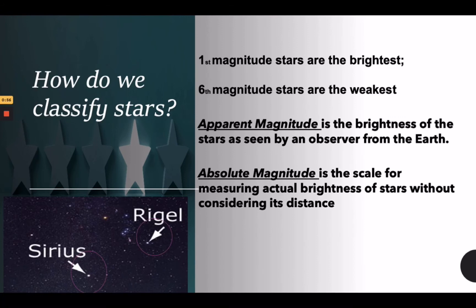To summarize: Rigel is brighter than Sirius if we talk about absolute magnitude, but since Sirius is closer to Earth, Sirius looks brighter than Rigel.